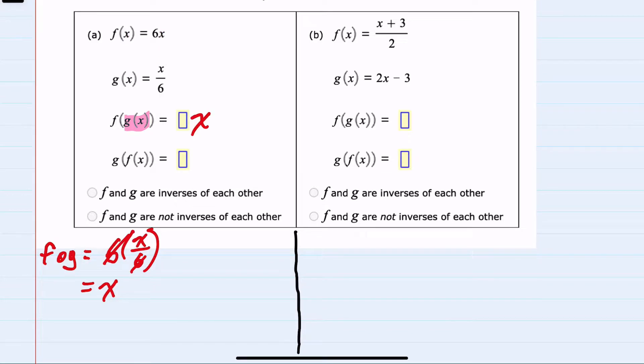I'll now turn to g of f of x. Here I will be taking the f of x function, plugging it in to g of x, which means replacing the x in g of x with 6 times x. So g of f of x, we are replacing the x in g with 6x. So this would be 6x over 6. And again here, we can see that the sixes cancel. g of f of x equals x.